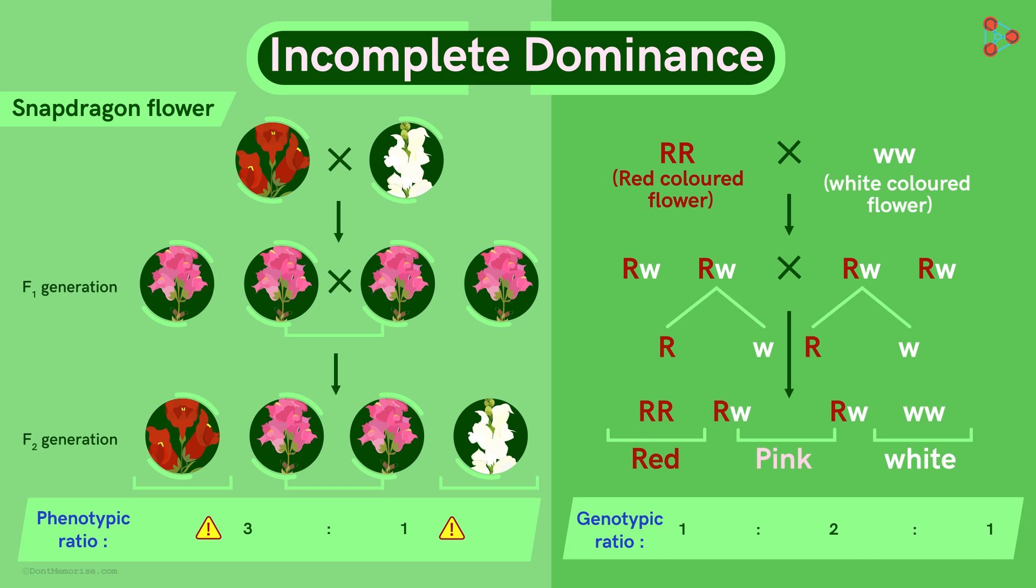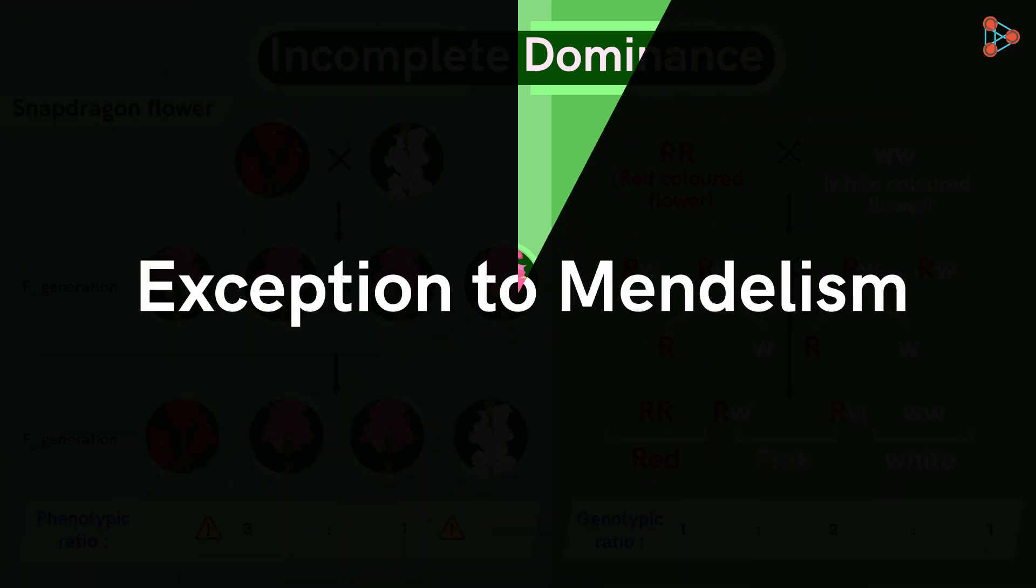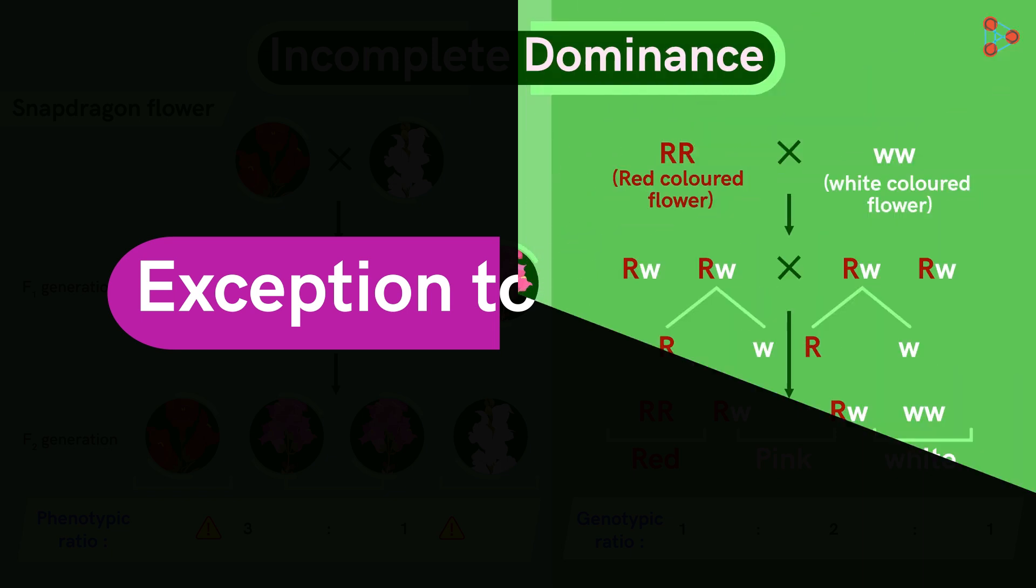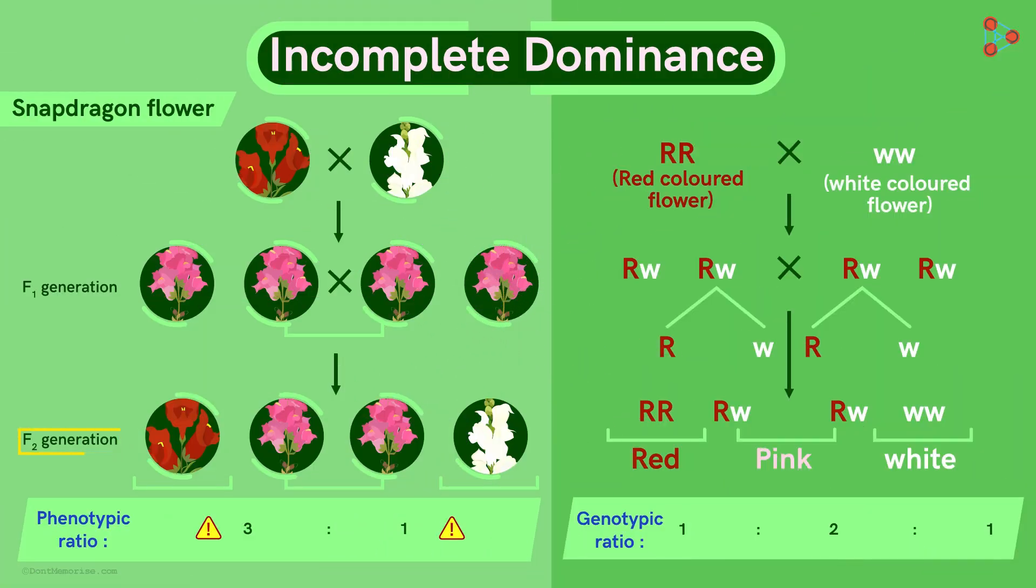So this pattern of inheritance seen in snapdragon is an exception to Mendelism but not entirely, because the F2 generation still exhibits the genotypic ratio 1 to 2 to 1. And if you noticed well, this is the phenotypic ratio as well.